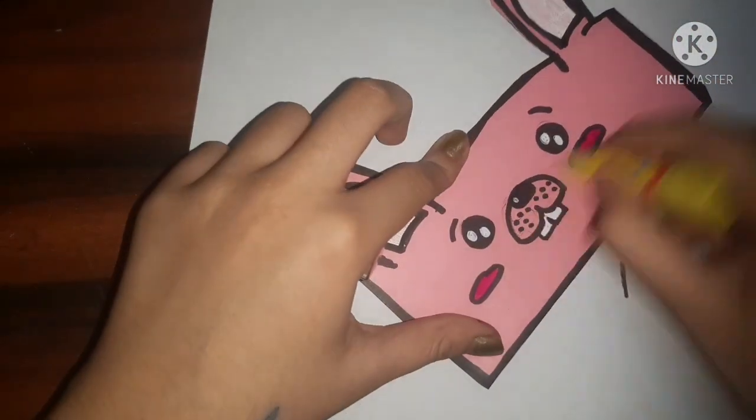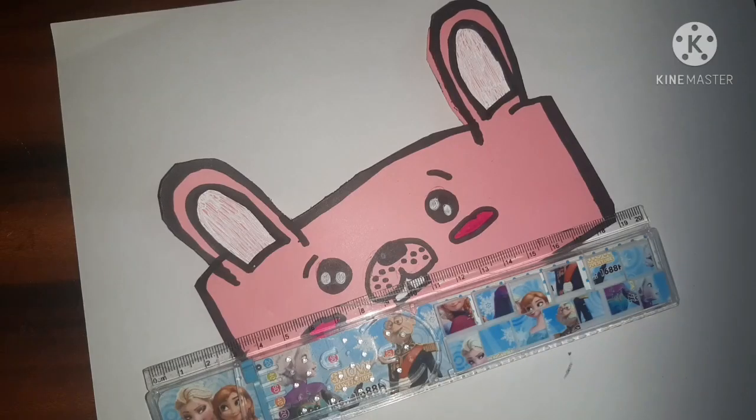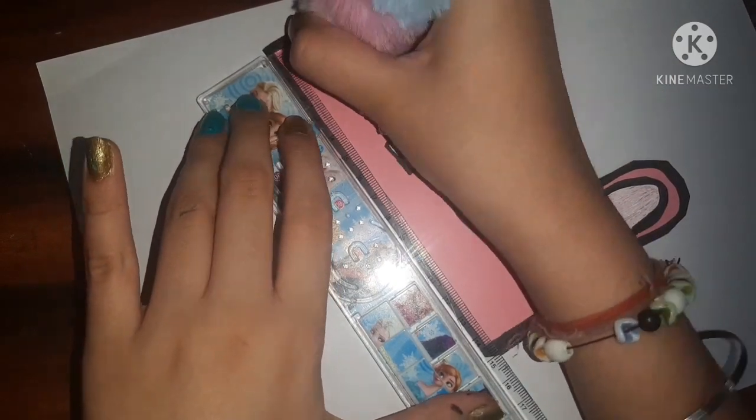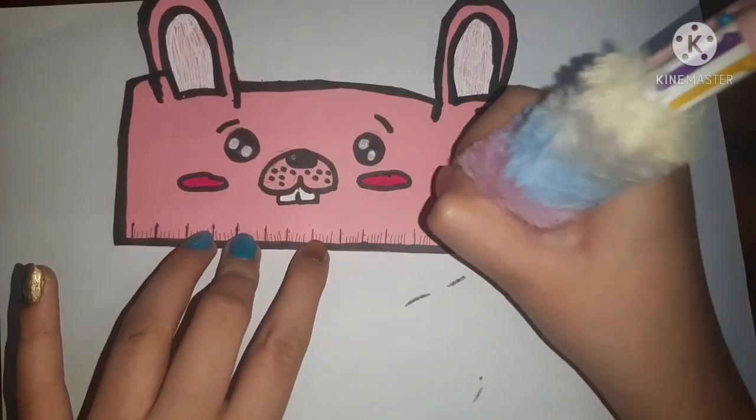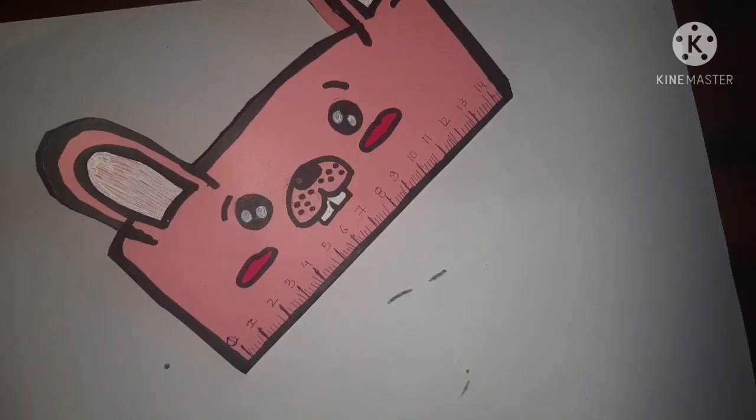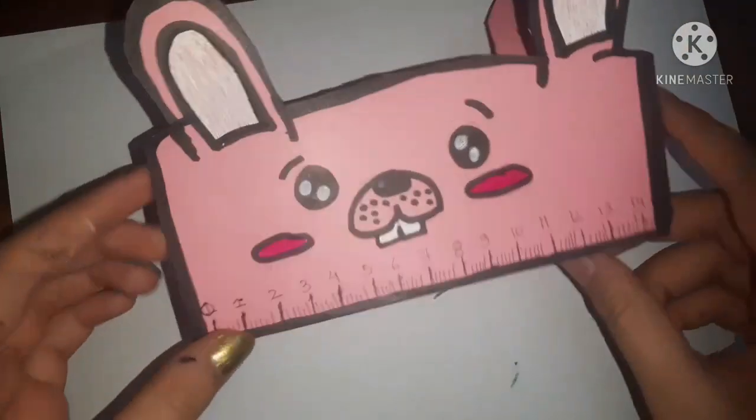Now with the help of our eraser I am just going to erase all the pencil outlines and now with the help of a real ruler I am going to make all the measurements. So quickly I made the measurements with the help of a black pen and added the numbers.